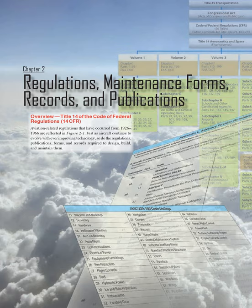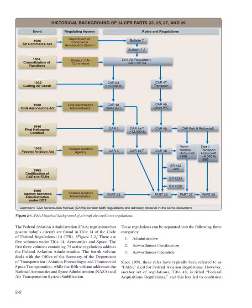Just as aircraft continue to evolve with ever-improving technology, so do the regulations, publications, forms, and records required to design, build, and maintain them. The Federal Aviation Administration (FAA) regulations that govern today's aircraft are found in Title 14 of the Code of Federal Regulations, 14 CFR. Figure 2-2: there are five volumes under Title 14, Aeronautics and Space.